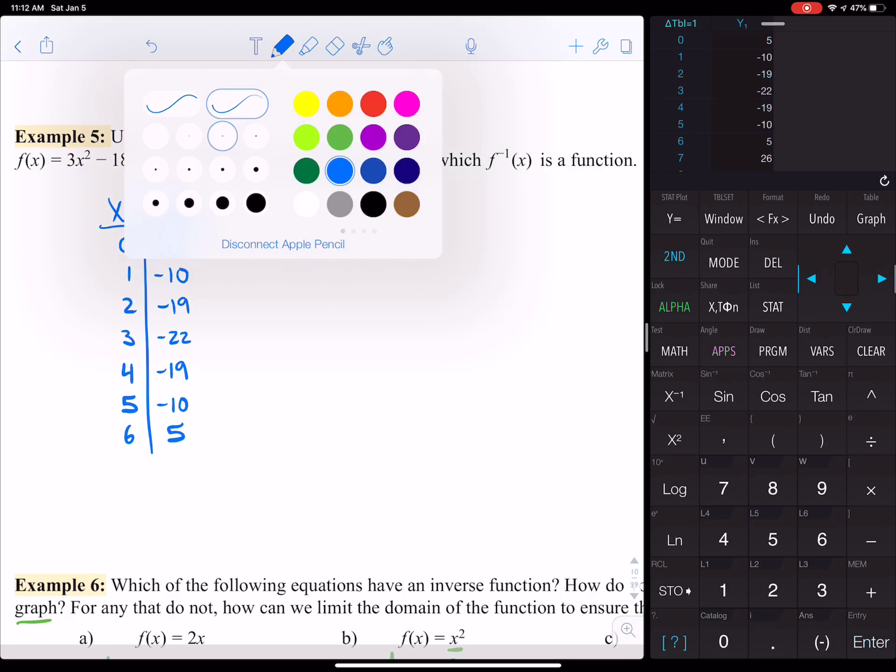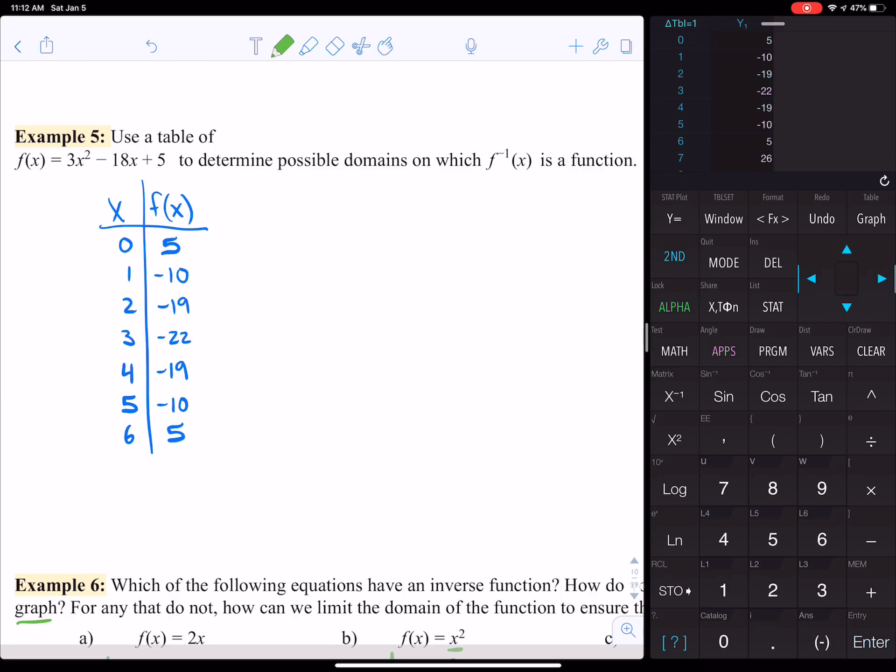So for the inverse function, we need to switch the x and the y. So the inverse function, I need to write that a little nicer. It should be f^(-1)(x).